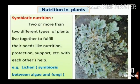Symbiotic Plants: In some cases, two or more different types of organisms live together to fulfill their needs of nutrition, protection, support, etc., with each other's help. Two living organisms that live together and are mutually beneficial to each other — this mode of obtaining nutrition is called symbiotic nutrition.